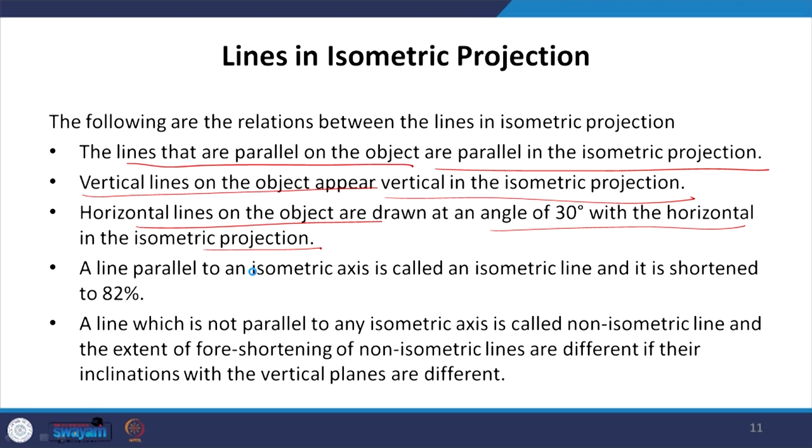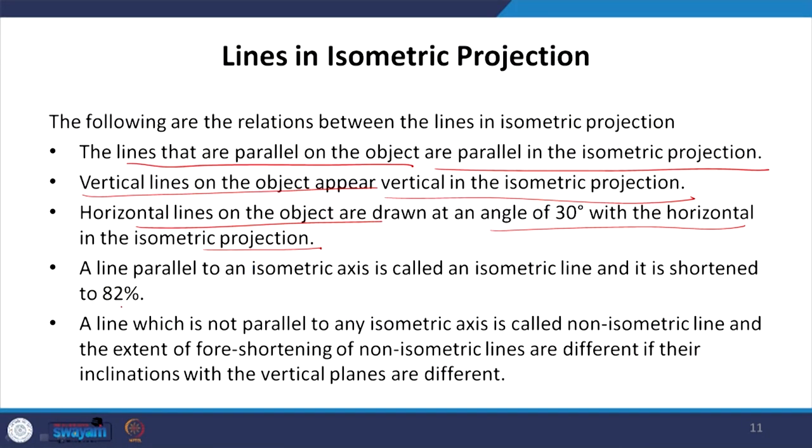We will be practicing many examples of all different types of objects — 2D and 3D objects kept in different positions — and we will see how these rules are applied in making isometric projections. The fourth rule is about true length and isometric length: it is shortened to approximately 82 percent, which is what we will see every time we make an isometric projection.